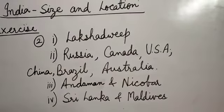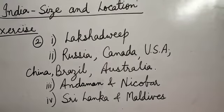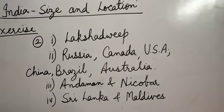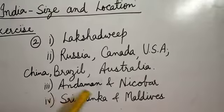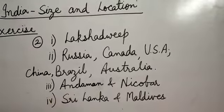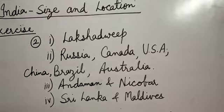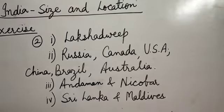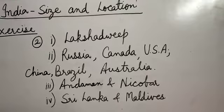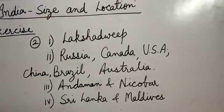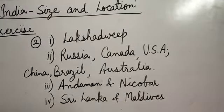Question number three: Which island group of India lies to its southeast? — It is the Andaman and Nicobar group of islands in the Bay of Bengal. Number four: Which island countries are our southern neighbors? — They are Sri Lanka and Maldives.